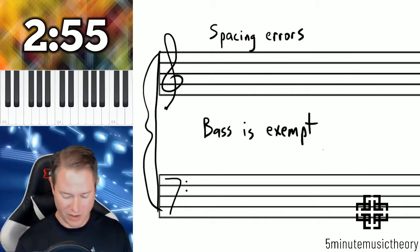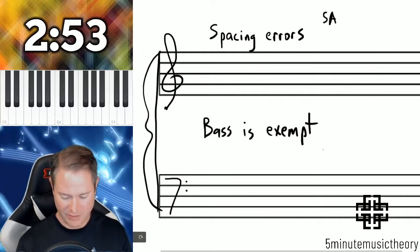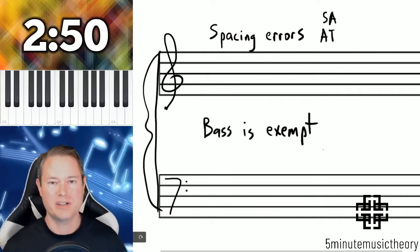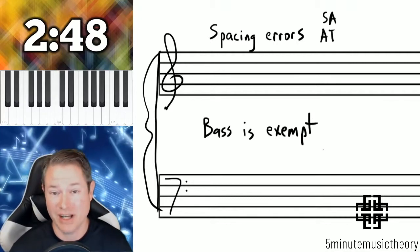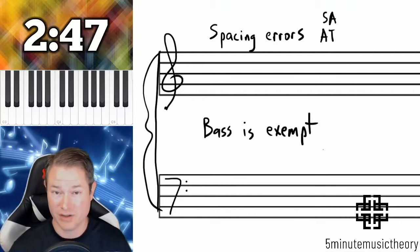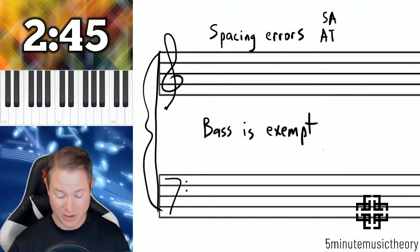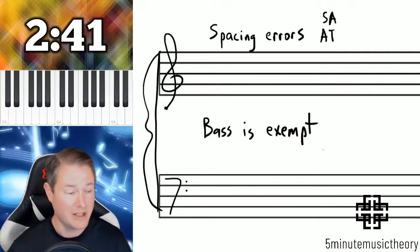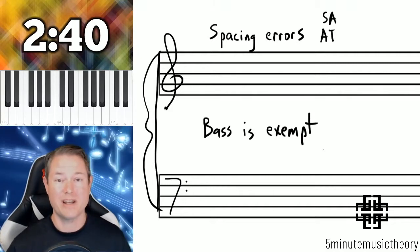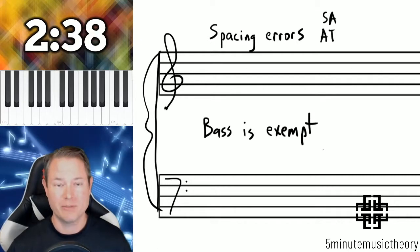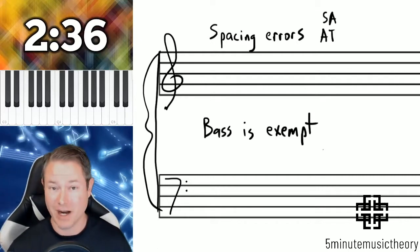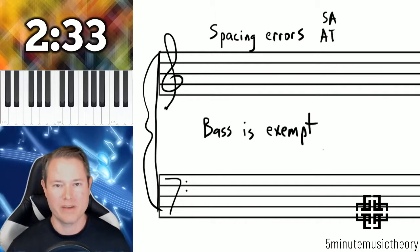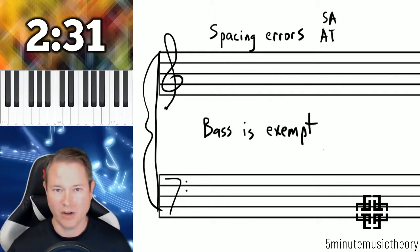Spacing errors occur between soprano and alto, and between alto and tenor. There's no such thing as a spacing error between the tenor and the soprano, because those are not consecutive voices. Spacing errors only occur between soprano-alto and alto-tenor, and that's when there's more than an octave between the two. Octaves are fine as long as they're not moving in parallel, but more than an octave would be considered a spacing error.